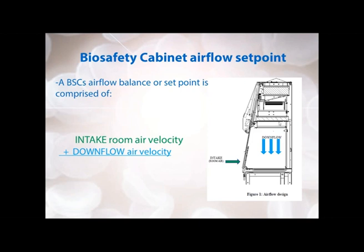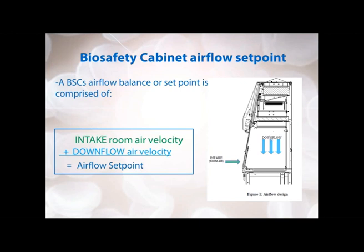This is then balanced with the amount of downflow air coming down through the HEPA filter, shown here, and through the diffuser, down into the work area. So you have two sources of air — one through the intake and one through the downflow. These two values or speeds of air make up the airflow set point.